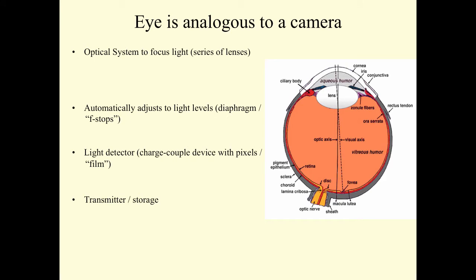We can start by pointing out that the eye is analogous to a camera. It has an optical system to focus light. In a camera, the optical system is the series of lenses. The eye can automatically adjust to light levels. In the camera, you have a diaphragm with f-stops. The eye can detect light. In a digital camera, you have a charge-coupled device with pixels, or film in a film camera.